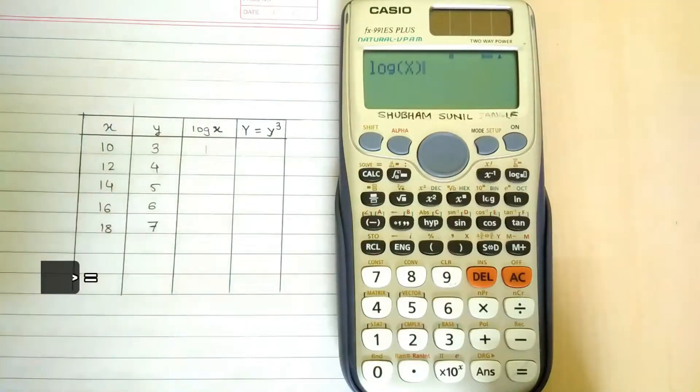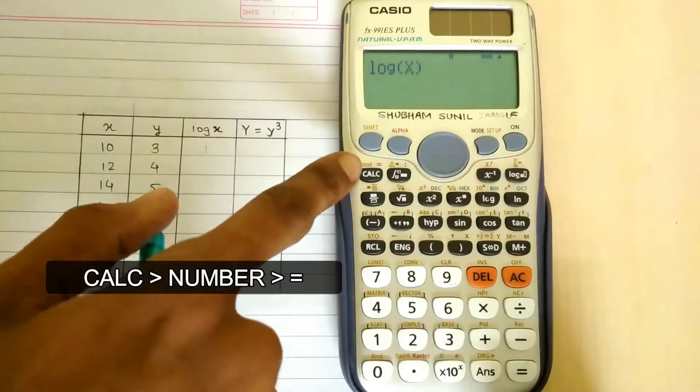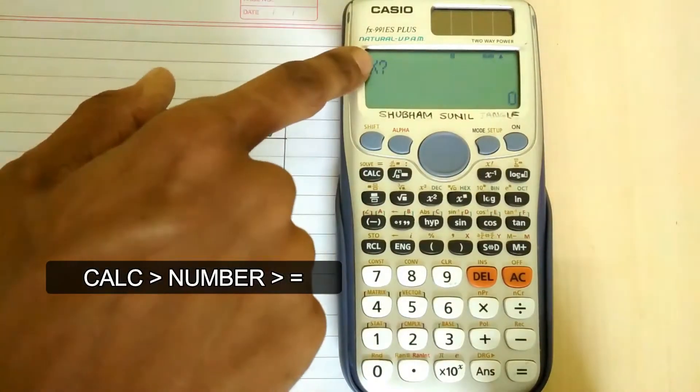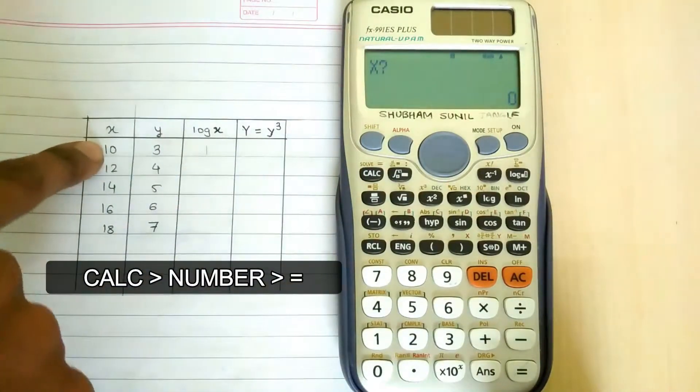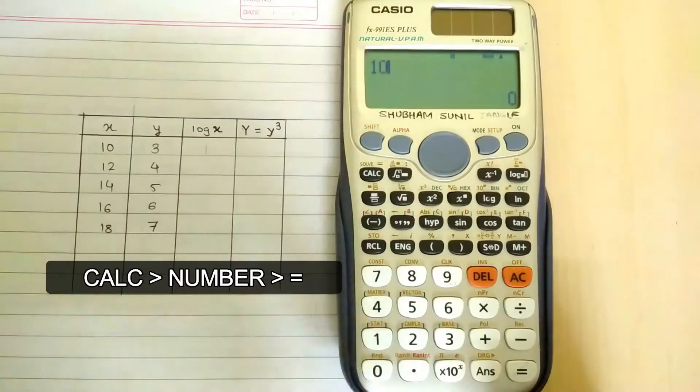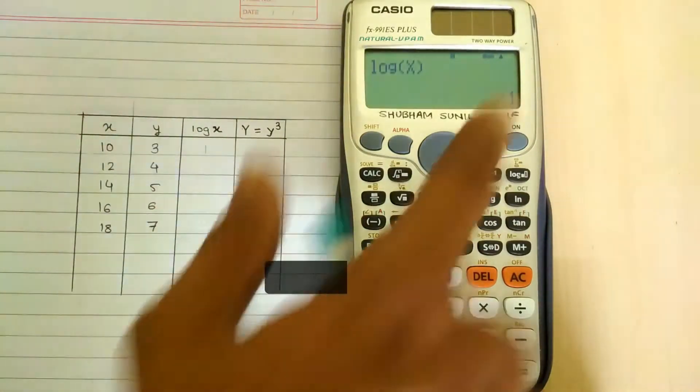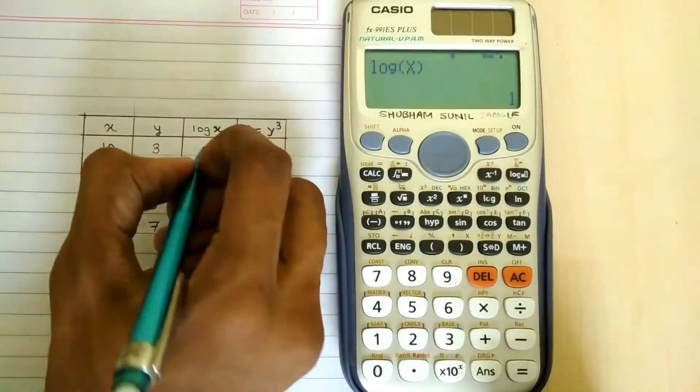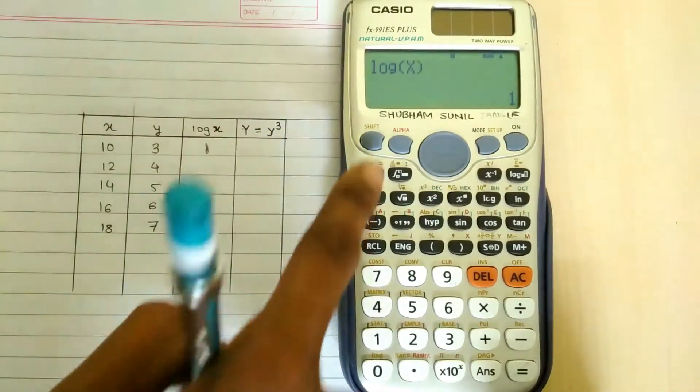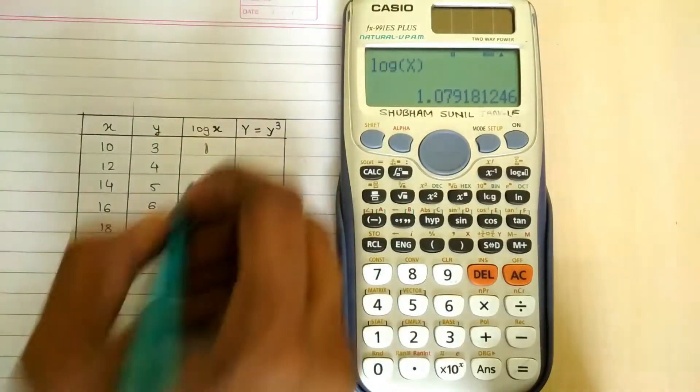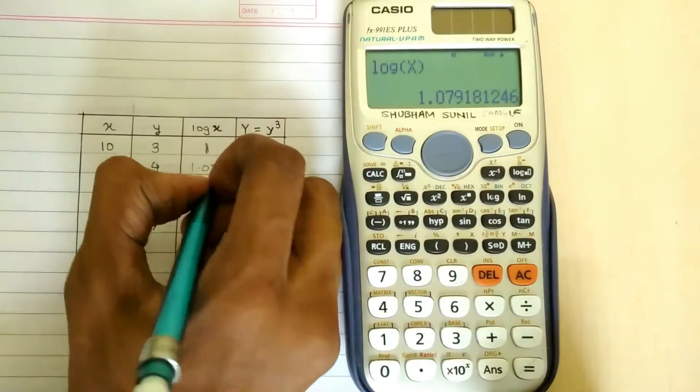Then press the calc button, so it is asking the value of x. Its first value of x is 10, so I will write here 10 and equal to. So I got 1, so I will write it down. Second, I will again press calc, value of x 12, equal to 1.079.